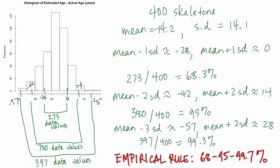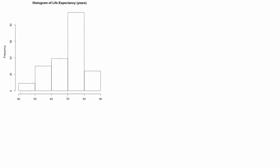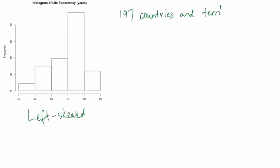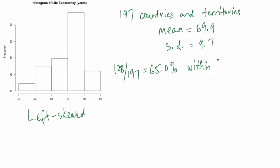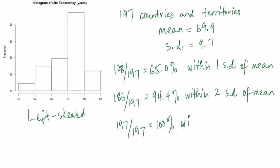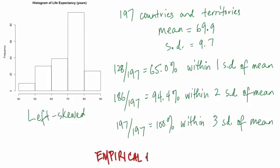Although it was derived from properties of symmetric and unimodal distributions, the empirical rule works surprisingly well in other situations. Let's see how it works for the life expectancy data, which is left skewed. The mean for these data is 69.9 and the standard deviation is 9.7. It can be shown that 128 of the 197 countries and territories — that's 65% — are within one standard deviation of the mean. 186, or 94.4%, are within two standard deviations of the mean. And all 197 countries and territories are within three standard deviations of the mean. We can see that even for this left skewed distribution, we are very close to the 68, 95, 99.7% of the empirical rule.